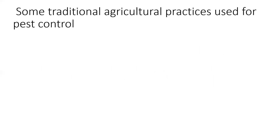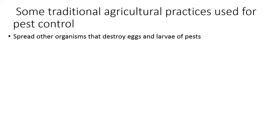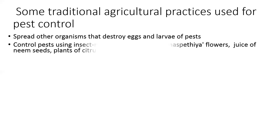Now we will find out some traditional agricultural practices used for pest control. Spread other organisms that destroy eggs and larvae of pests. Control pests using insect-repelling substances such as citrus flowers, juice of neem seeds, and plants of the citrus family.